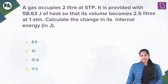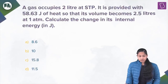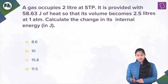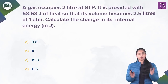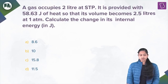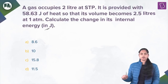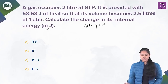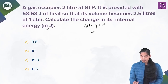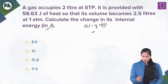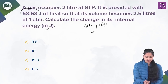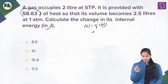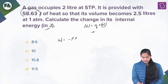The next question: a gas occupies 2 liters at STP. It is provided with 58.63 joules of heat so that its volume becomes 2.5 liters at 1 atm pressure. Calculate the change in internal energy in joules. From the first law of thermodynamics: ΔU = Q + W, where Q is heat supplied and W is work done.